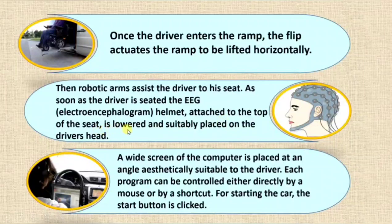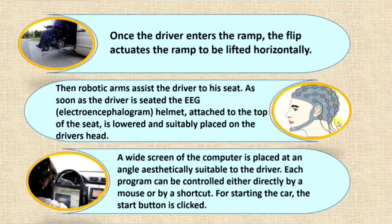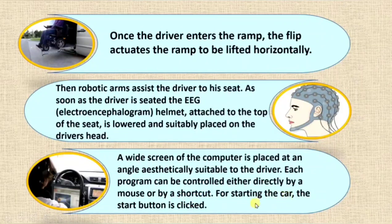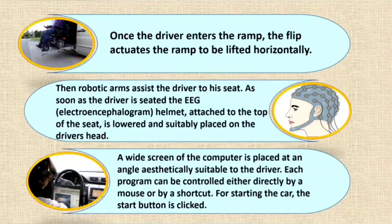As soon as the driver is seated, the EEG helmet attached to the top of the seat is lowered and suitably placed on the driver's head. A screen is also placed at an angled table to the driver. Each program can be controlled either directly by mouse or by shortcut. The screen is connected with the brain waves of the driver, so he can control the whole system of the car with his brain.